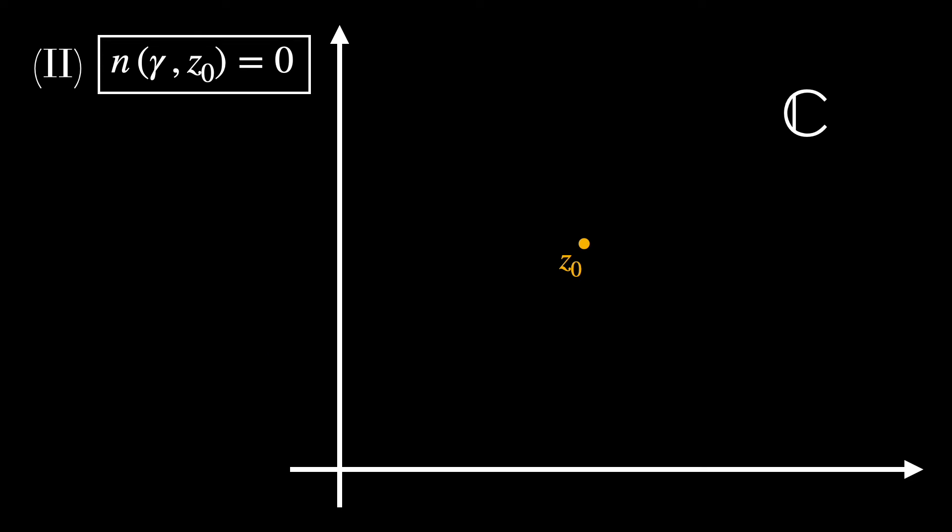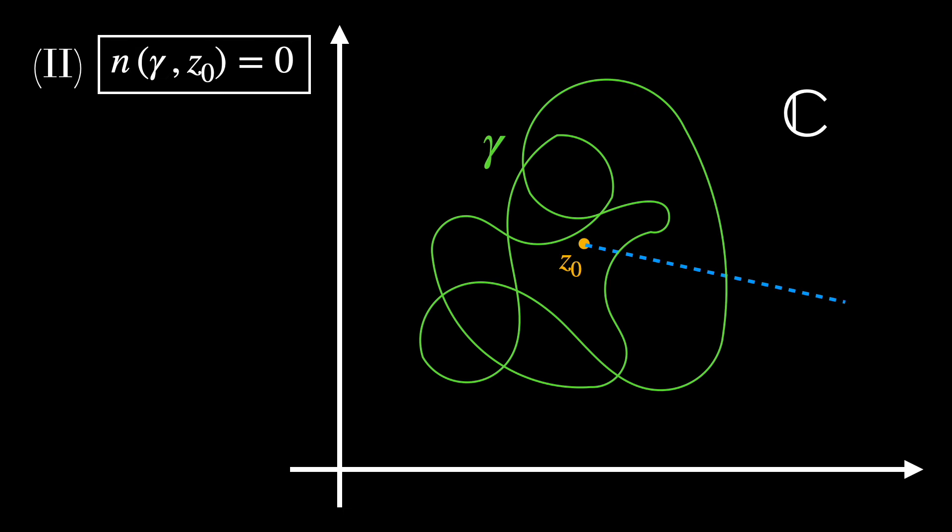Second example, winding number equals zero. So the net circulation is zero around this point. Using the same strategy as before, we trace this line from the point z0 and we see the intersection points. In this case, one of them flows counterclockwise and the other clockwise, so that the winding number is going to be plus one minus one.